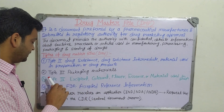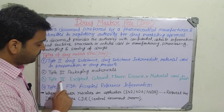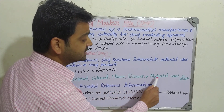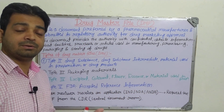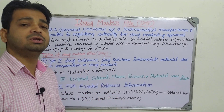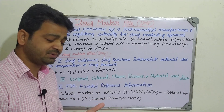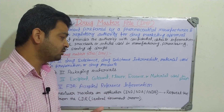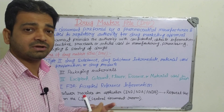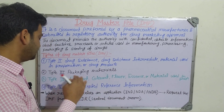The third type is the Type 4 file, which covers excipients, colorants, flavors, essences, and other materials used in preparation. Along with the drug, there are many other components involved in formulation — colors, flavors, essences, and various other materials used to make the product attractive — and all these details must be included in this file.